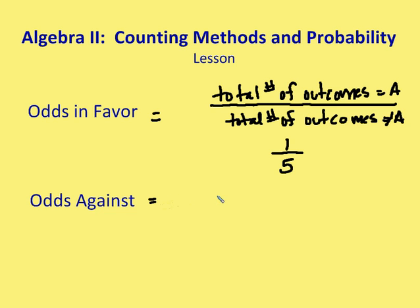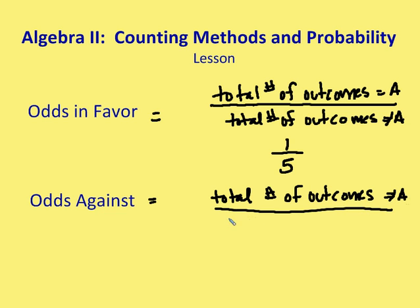Now the odds against something happening are just simply the total number of outcomes that are not A, so just the reciprocal of odds in favor, over the total number of outcomes that are A. In this case, if I said, what are the odds against rolling a one, it would be the total number of outcomes that are not A, which would be five, and the total number of outcomes of A would be one. So my odds against would be five to one.